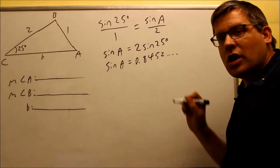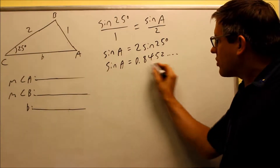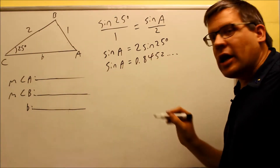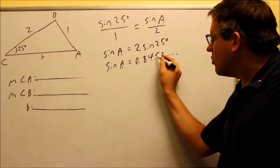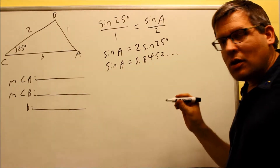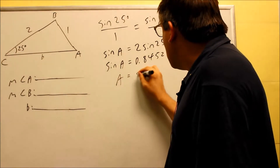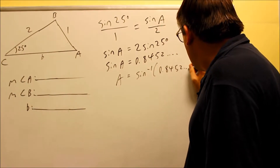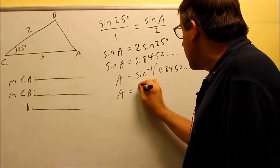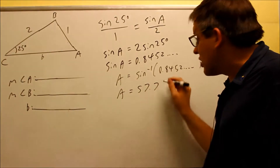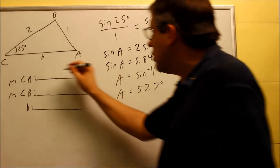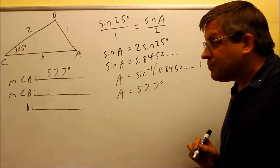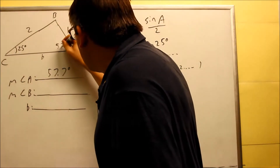This is definitely going to give us a solution, because 0.8452 is between negative 1 and 1. So unlike the last example, this actually will allow us to get an answer. We take the inverse of both sides, and putting that into the calculator gives us 57.7 degrees — that's your first answer for angle A.